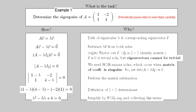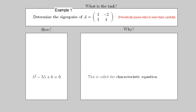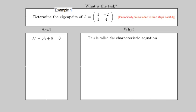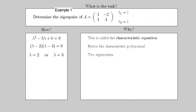Here, lambda squared minus 5 lambda plus 6 equals 0. The solutions to the characteristic equation are the eigenvalues themselves. In this case, 2 and 3.